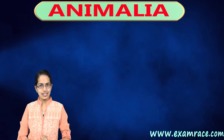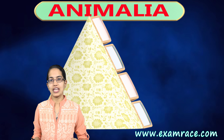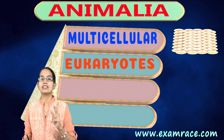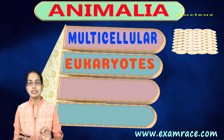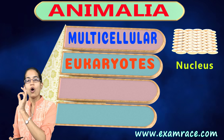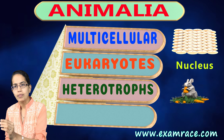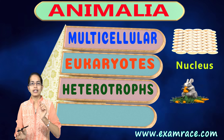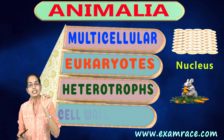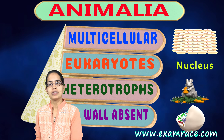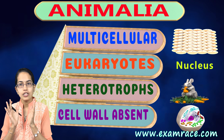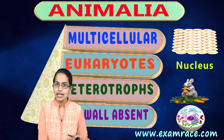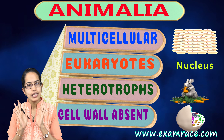Animal classification is more interesting than plant classification. The highlights of the animal kingdom: they are multicellular and eukaryotic, meaning they have a well-differentiated nucleus. They depend on plants or other organisms for food — that is, they are heterotrophs and cannot produce food by themselves. The most important difference from plant cells is that cell wall is absent in animals; plants have a cell wall because they are non-motile and need protection.